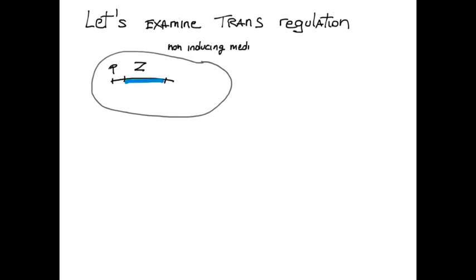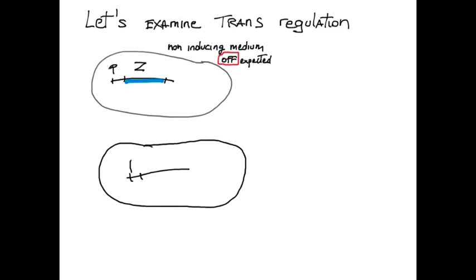Let's consider trans regulation. Consider two bacteria with identical phenotypes, the constitutive phenotype, however, is now caused by a faulty lac I, the repressor.